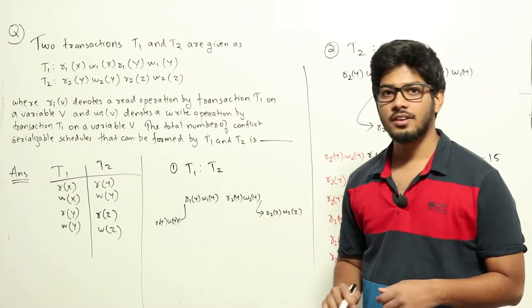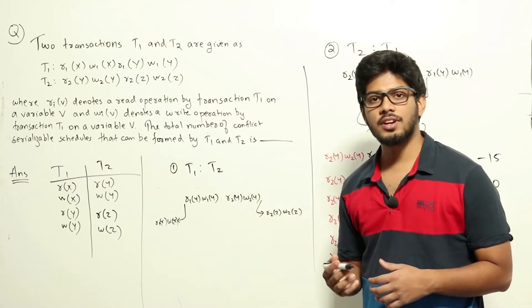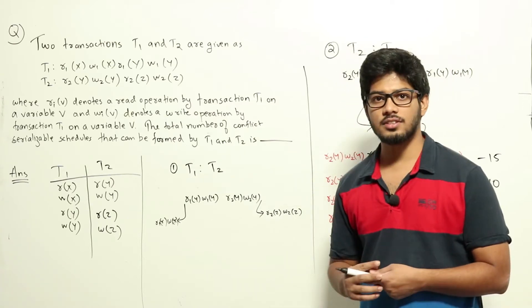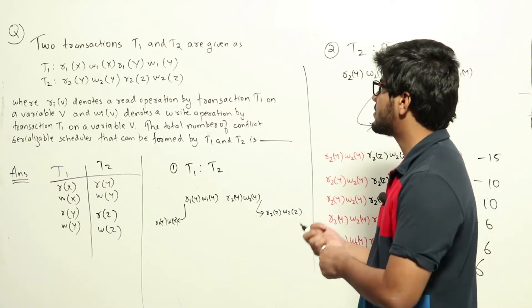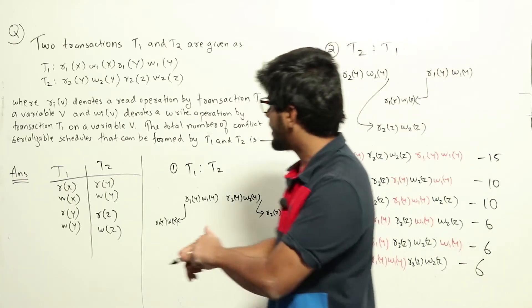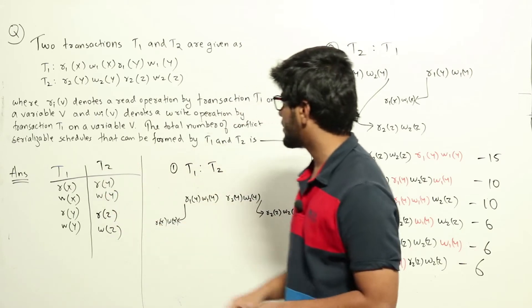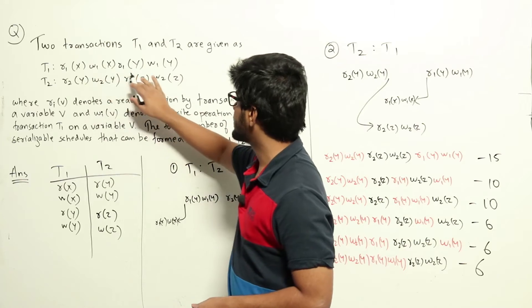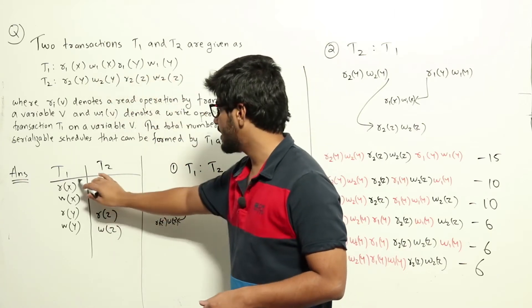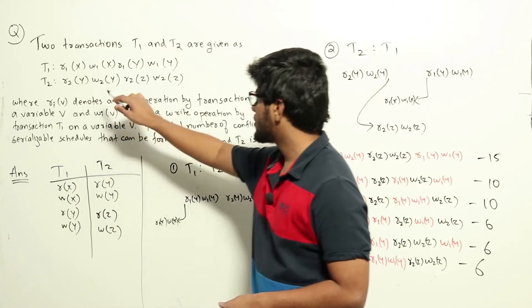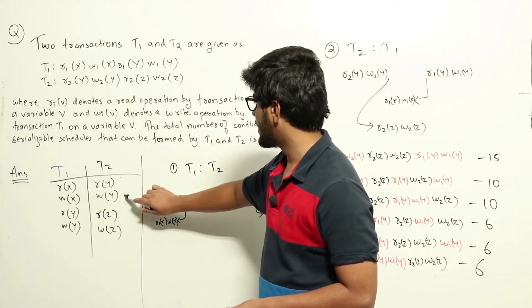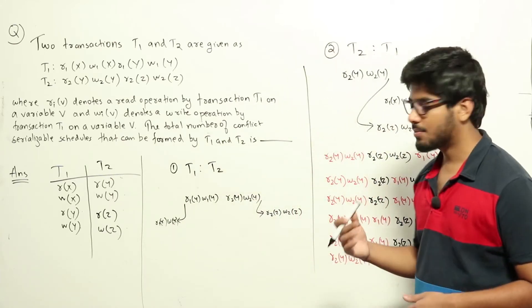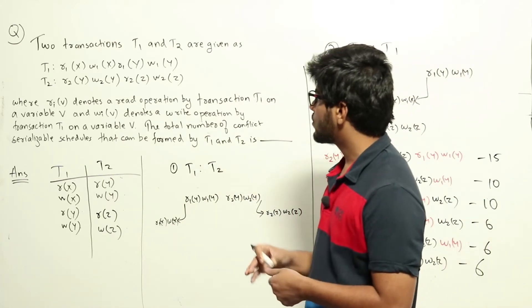This question comes from DBMS topics regarding transactions and asks about conflict serializability. If you don't understand what conflict serializability means, please refer to the video lecture on the topic before trying to solve this question. So T1 has R(X), W(X), R(Y), W(Y) and T2 has R(Y), W(Y), R(Z), W(Z).